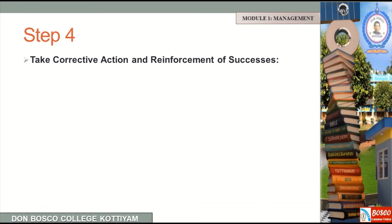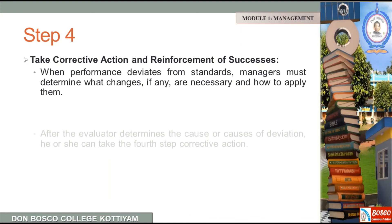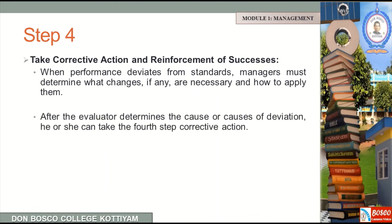The last step of the controlling process is taking corrective action and reinforcement of success. When performance deviates from standards, managers must determine what changes are necessary and how to apply them. After comparing standards and actual performance, if there is a deviation, we maintain it or correct it. After the evaluator determines the cause of deviation, he or she can take the fourth step — corrective action. The corrective action may be to maintain the status quo, correct the deviation, or change the standards.